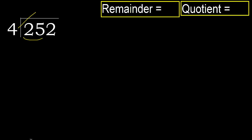But not greater. 4 multiplied by 7 is 28 — 28 is greater. 4 multiplied by 6 is 24. 24 is not greater, ok.